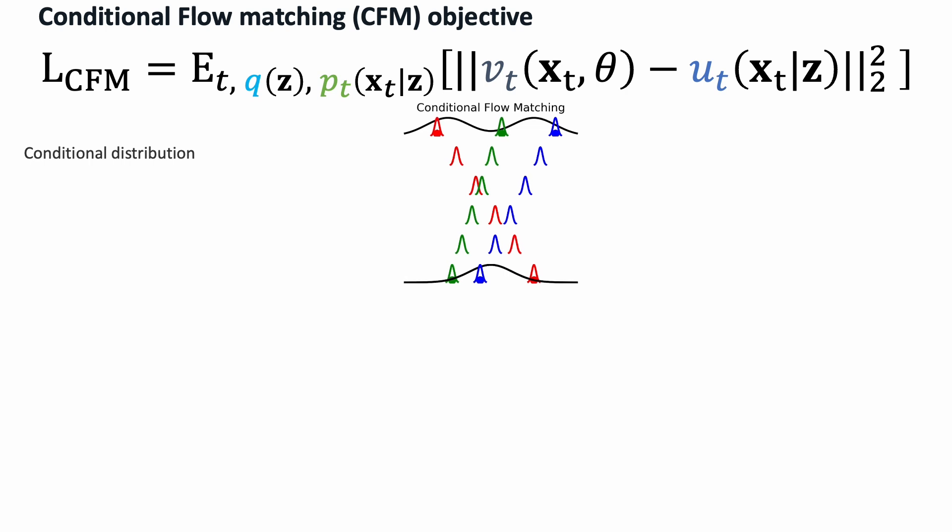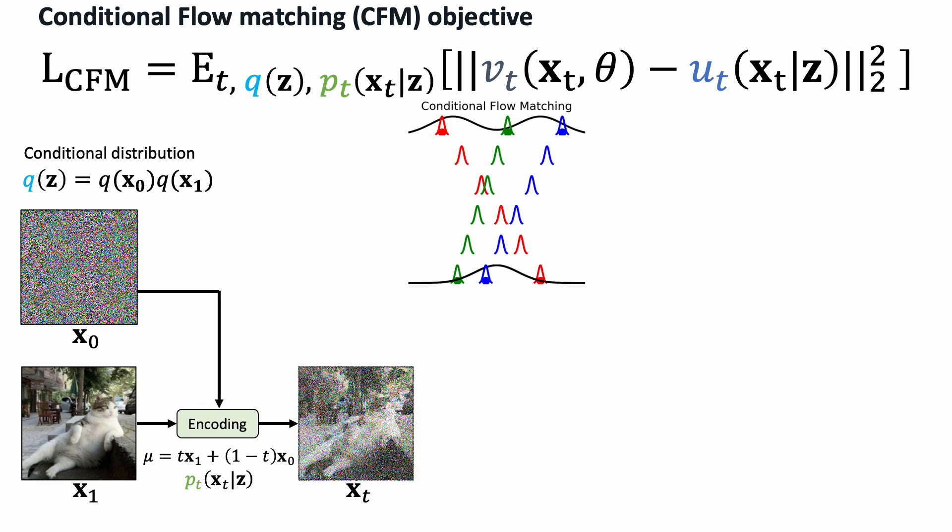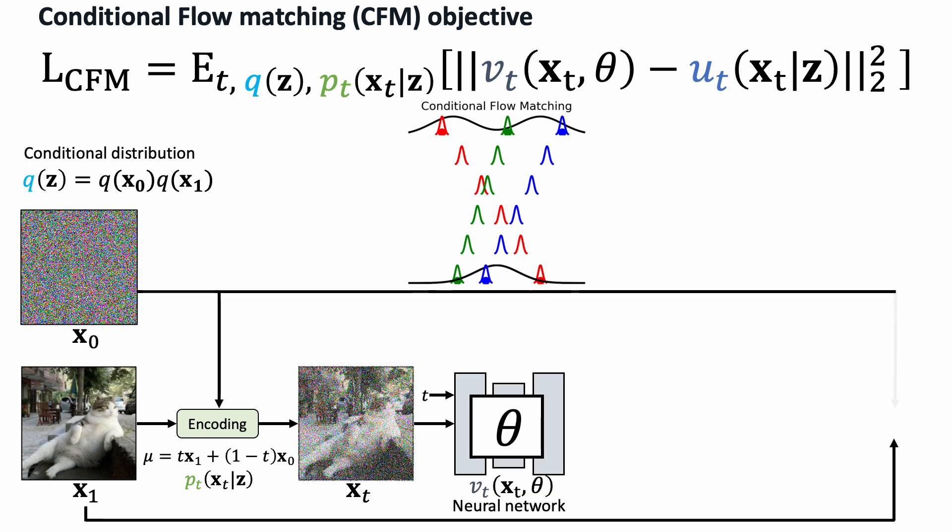Now let's visualize the training process. We independently sample a data point x1, a noise x0 from the base distribution. Based on the probability paths, we can create a sample xt. Using this noisy sample, we train a neural network to match the conditional vector field. In this example, the conditional vector field is a constant vector from noise to data.